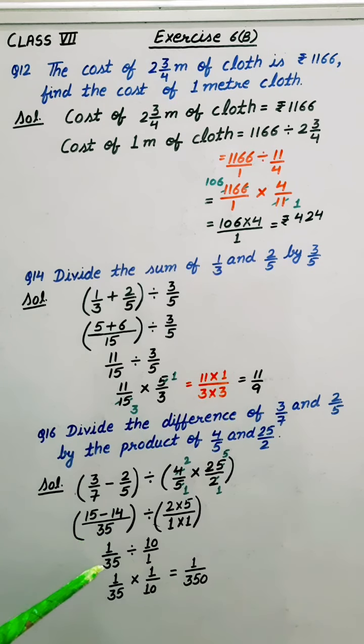On subtraction it is 1 upon 35 divided by 10 upon 1. Divide changes into multiply. So here it becomes 1 by 10. So finally answer is 1 upon 350.